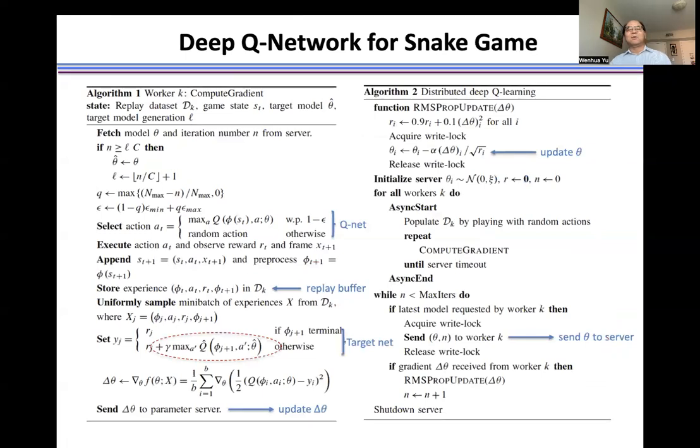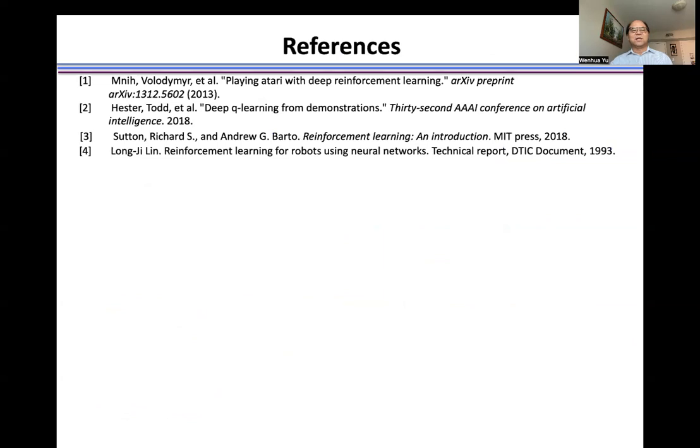Another typical example is the snake game. The same way, usually use the target network. Just scan the action a' to see which Q is the maximum. And then use this maximum Q in the target to train the Q-network. For more details, please check this reference. Thank you, bye.